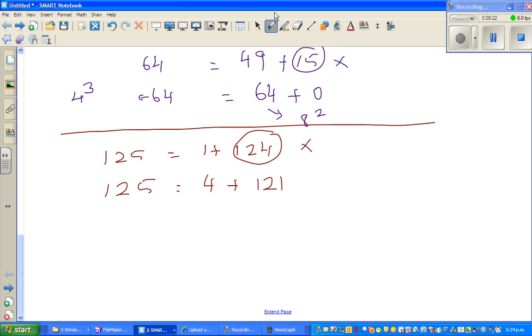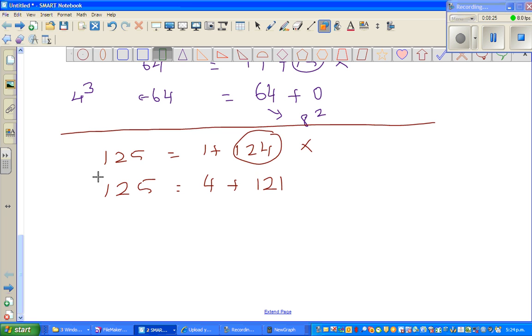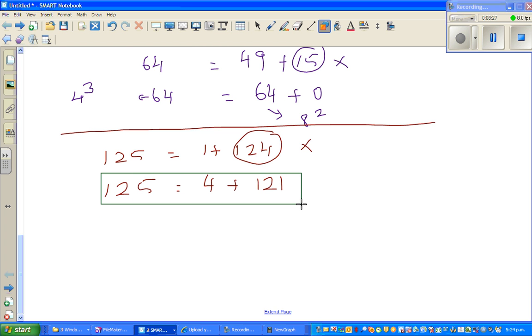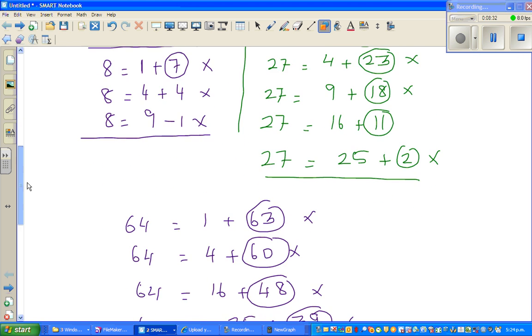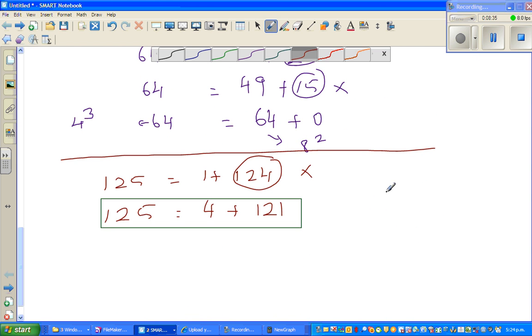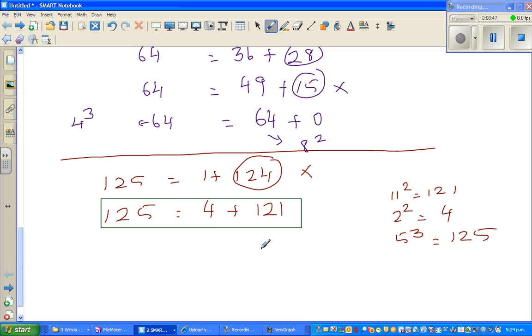I want you to stop now and see whether any bells are ringing. Does this equation satisfy our condition? What do you know about 121? 121 = 11² and 2² = 4, and 5³ = 125. So we can write 2² + 11² = 5³.